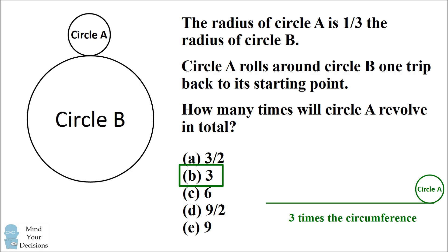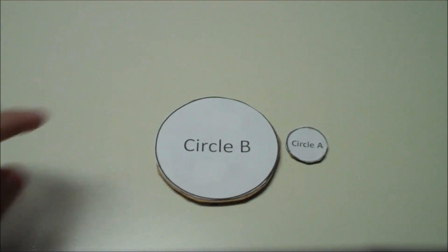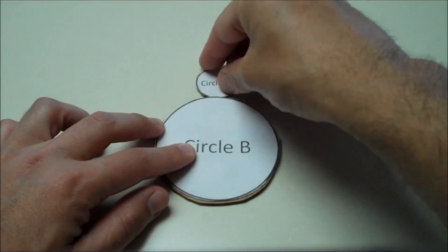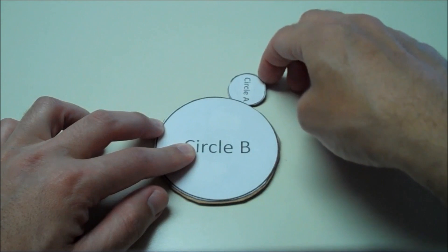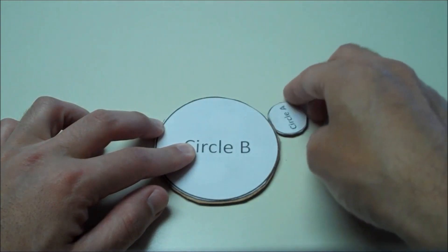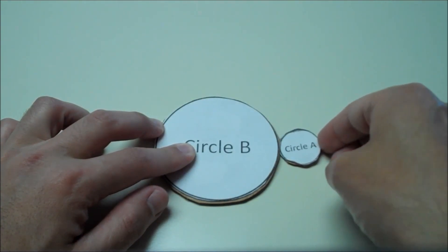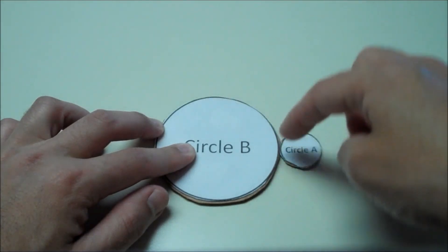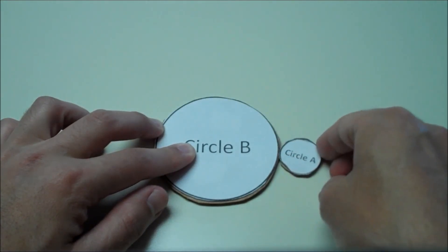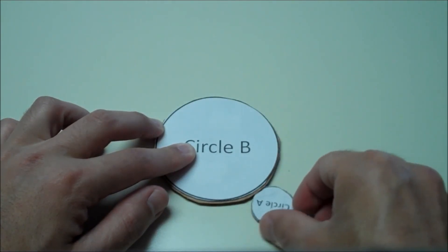But let's do a little experiment and see what actually happens if we have circle A rolling around circle B. I've made cardboard cutouts of these circles. If circle A starts at the top and I carefully roll it around circle B, after one quarter of the distance, circle A is already revolved around one time.